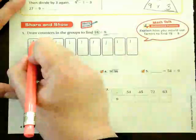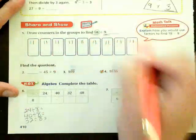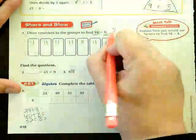So I have 9 already. 10, 11, 12, 13, 14, 15, 16, 17, 18. How many counters do I have in each group? 2.